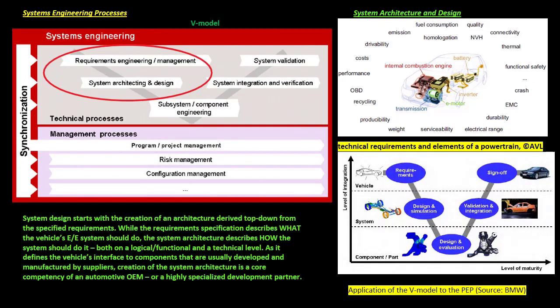System design starts with the creation of an architecture derived top-down from the specified requirements. While the requirements specification describes what the vehicle's EE system should do, the system architecture describes how the system should do it, both on a logical, functional, and a technical level. As it defines the vehicle's interface to components that are usually developed and manufactured by suppliers, creation of the system architecture is a core competency of an automotive OEM, or a highly specialized development partner.